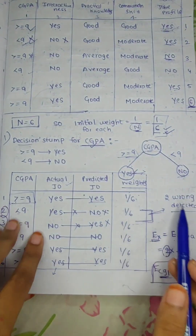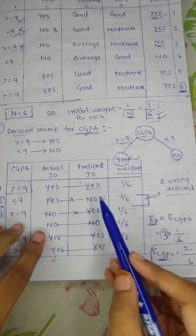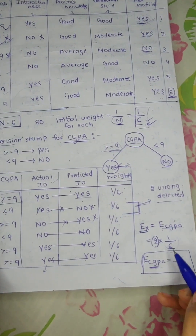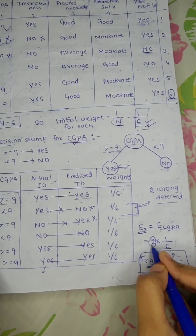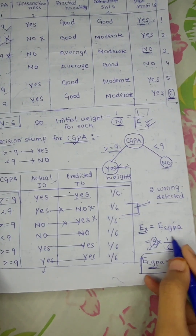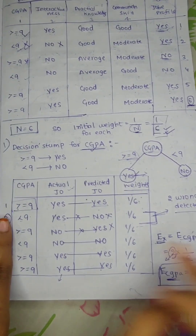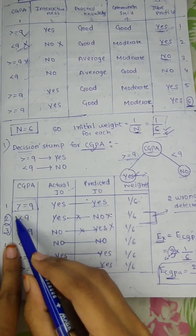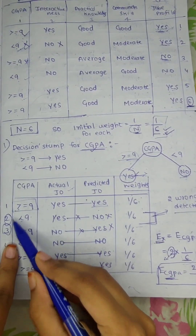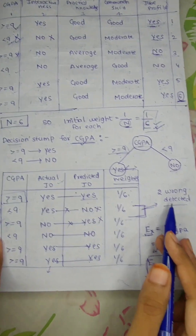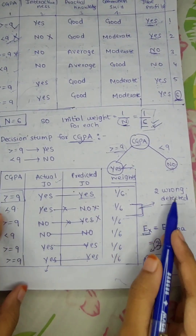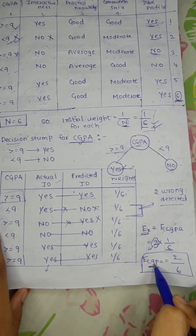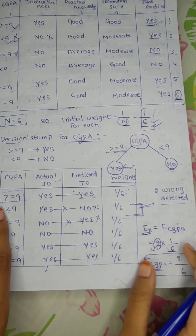Now we calculate the error for CGPA. The error formula is: number of incorrect ones multiplied by the weight of each. Two inputs are incorrect — the second and third. So the error is 2 into 1/6, which equals 2/6, or 1/3.